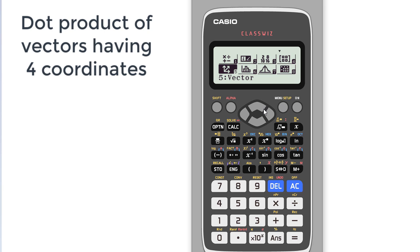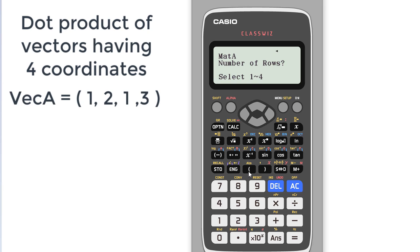I will go to the menu and then add option four. It is matrix. Okay, matrix. I will define matrix A, and we need one row and four columns because we need a vector with four values. And I will put the values: 1, 2, 1, and 3.